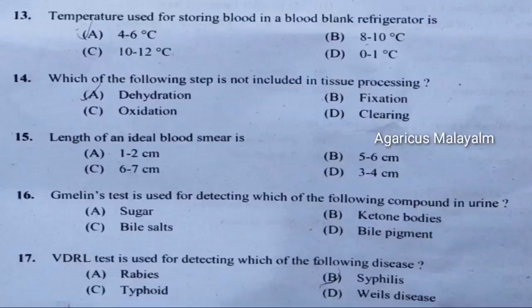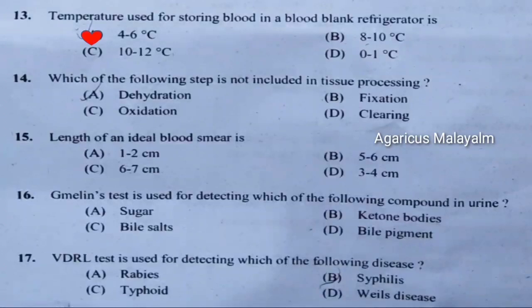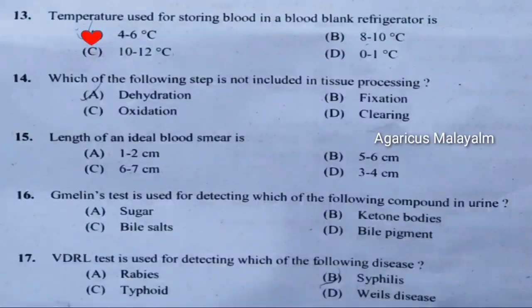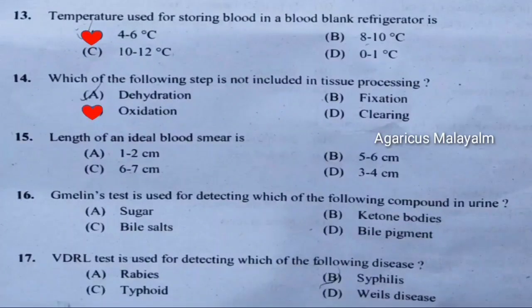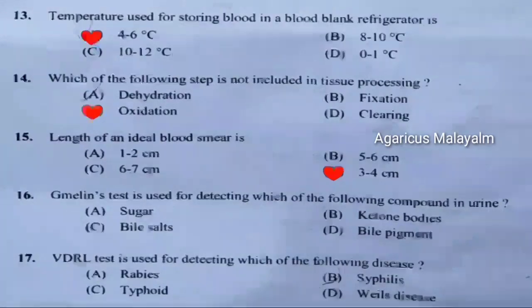Thirteenth question: Temperature used for storing blood in a blood bank refrigerator is. Correct answer is option A — 4 to 6 degrees Celsius. Fourteenth question: Which of the following step is not included in tissue processing? Correct answer is option C — oxidation. Fifteenth question: Length of an ideal blood smear is. Correct answer is option D — 3 to 4 centimeters.